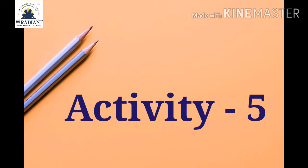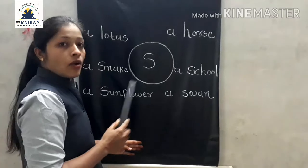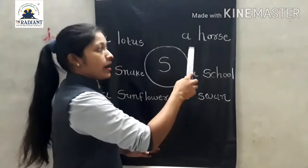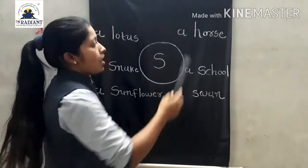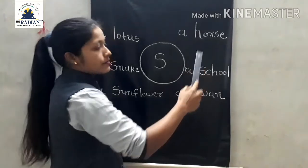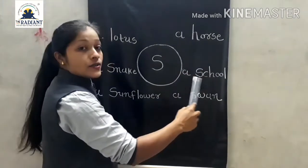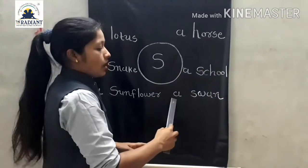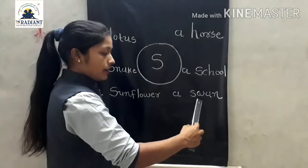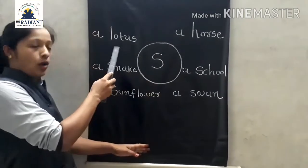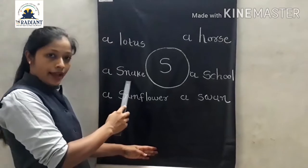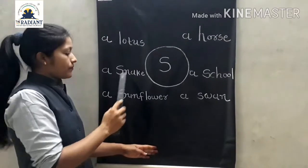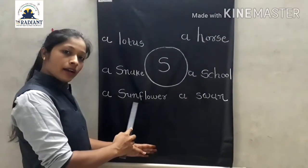Now we will see activity 5. Ok friends, hao hai tamare maara kachiyaya words repeat karwane vayache. A horse, a school, a spa, a lotus, a snake, a sandabar.